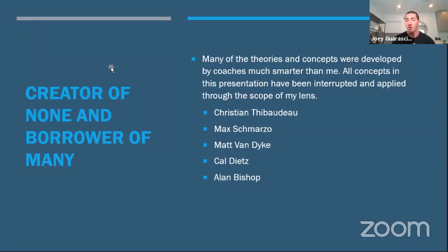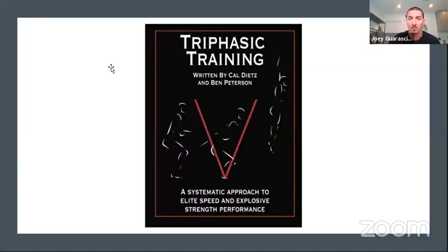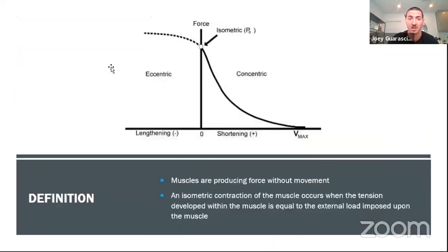Christian Thibodeau, Max Marza, Matt Van Dyke, Cal Dietz, Alan Bishop — if you're looking for more information, I highly suggest you buy Max and Matt's book. It's extremely thorough and I reference it a ton. I highly suggest you get Triphasic Training — people lean on this book because of how good the information is. And then High Threshold Muscle Building by Christian Thibodeau, who does a fantastic job talking about a lot of these concepts.